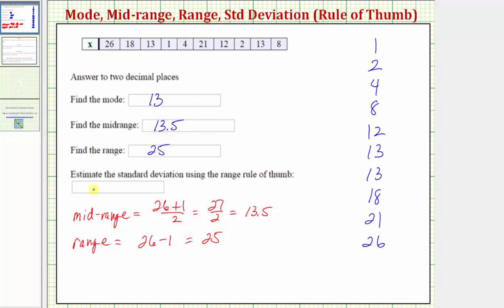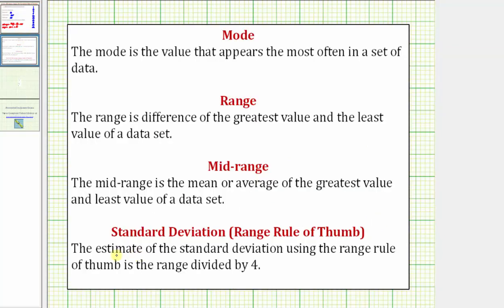And then finally we want to estimate the standard deviation using the range rule of thumb. The estimate of the standard deviation using the range rule of thumb is the range divided by 4.